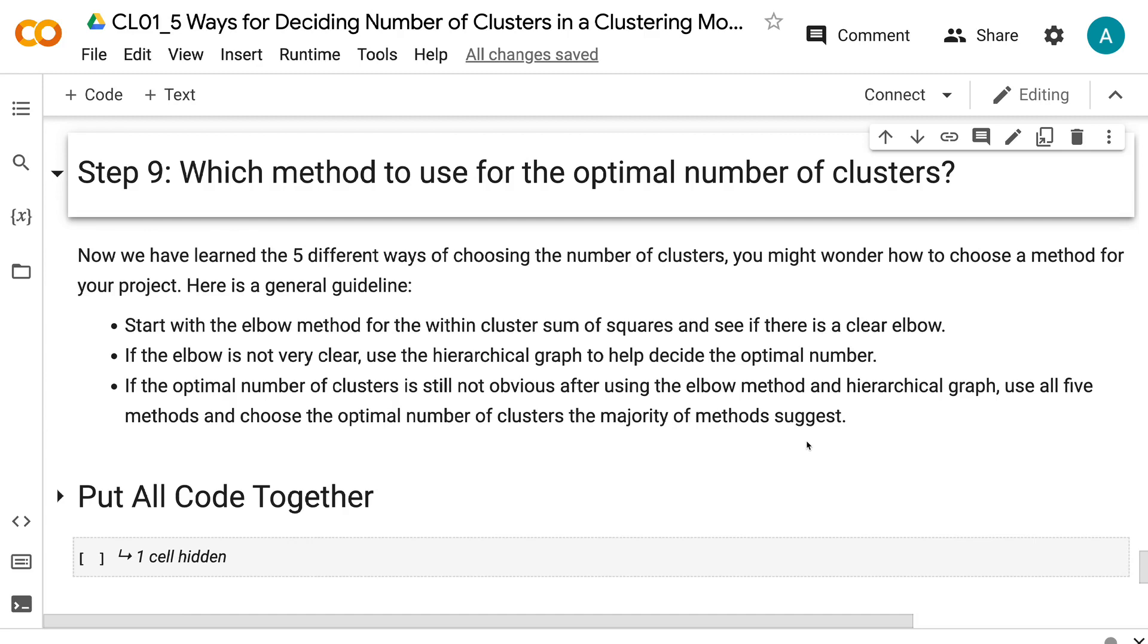If the elbow is not very clear, use the hierarchical graph to help decide the optimal number. If the optimal number of clusters is still not obvious after using the elbow method and hierarchical graph, use all five methods and choose the optimal number of clusters the majority of methods suggest.